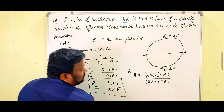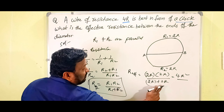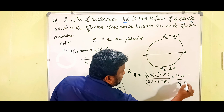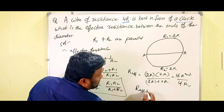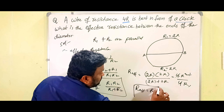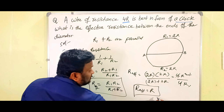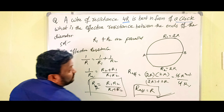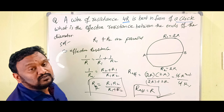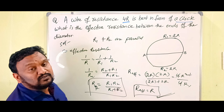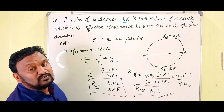R1 = 2R and R2 = 2R, so R_effective = (2R × 2R) / (2R + 2R) = 4R² / 4R. The 4 and R cancel, giving R_effective = R. So the effective resistance between points A and B is R.